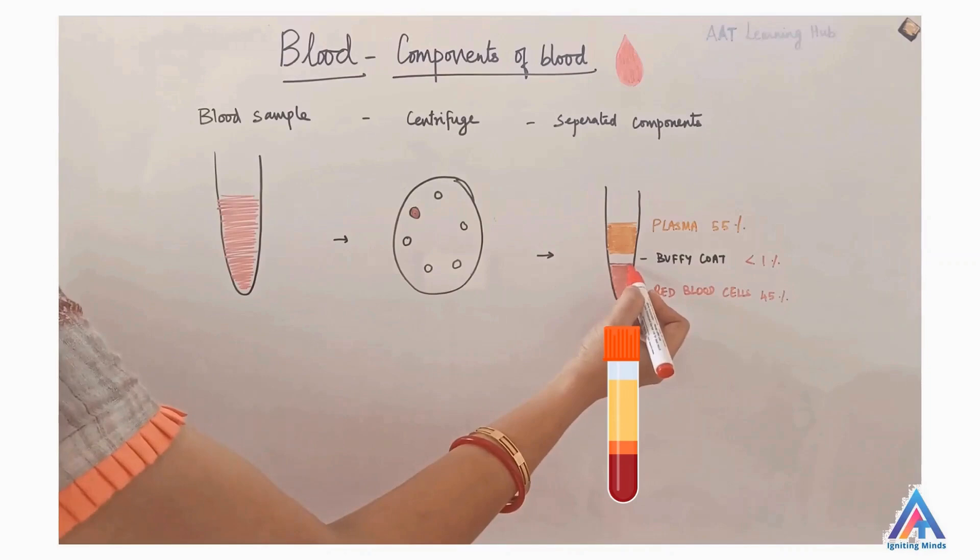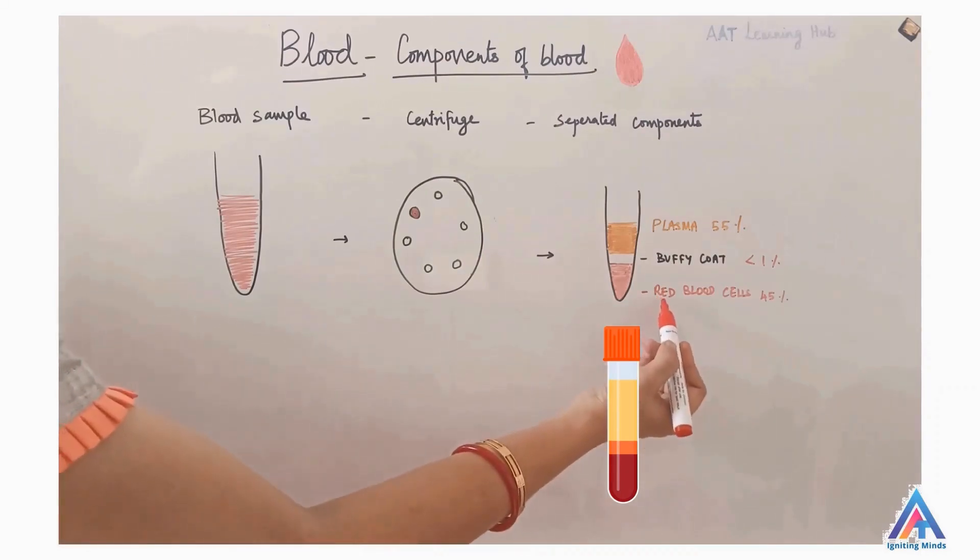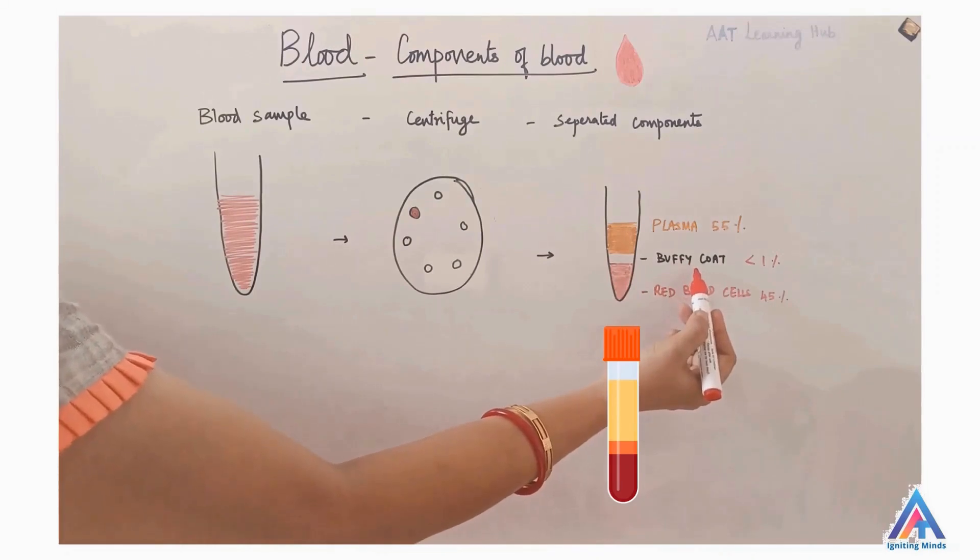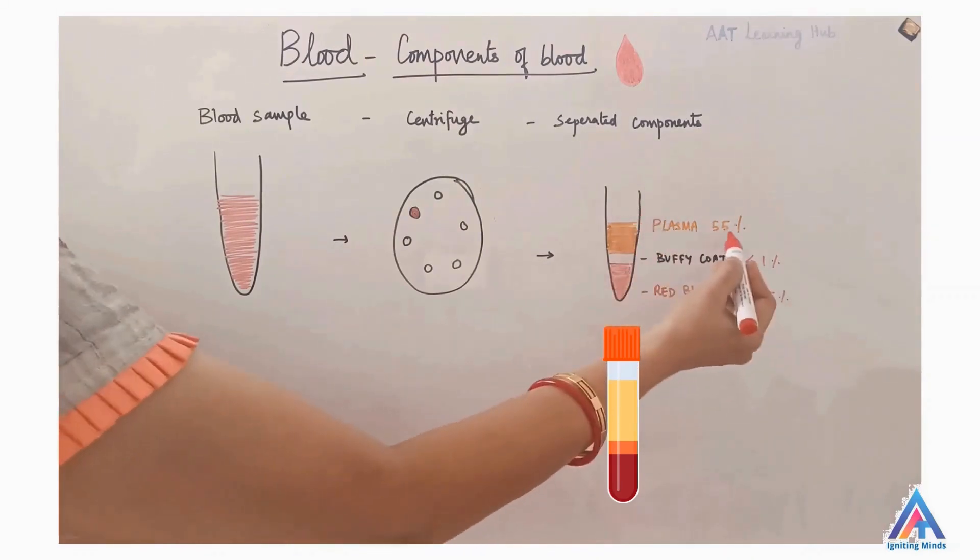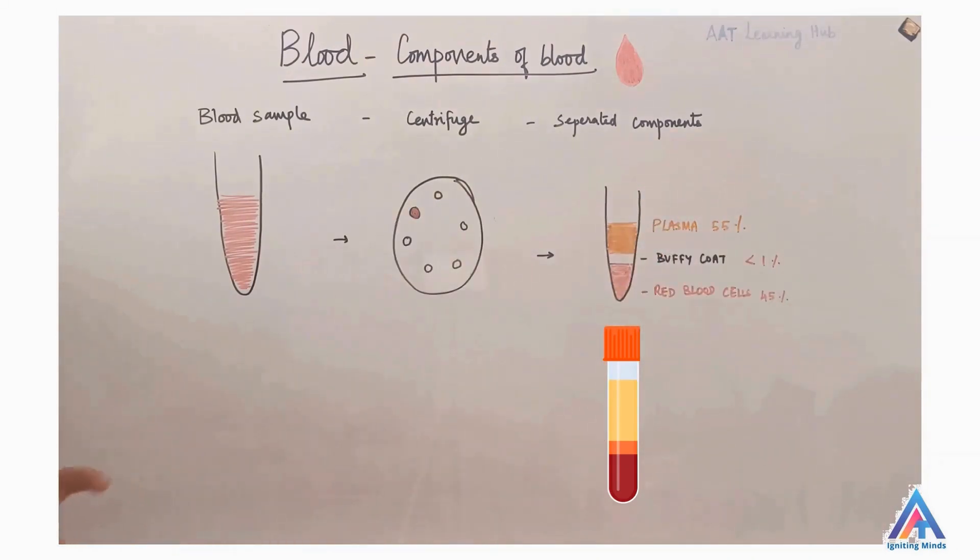So this is what we get after the centrifugal process. The denser components, which are the red blood cells, settle at the bottom of the tube. The middle thin layer is called the buffy coat, and then plasma makes up to 55% of the sample blood.